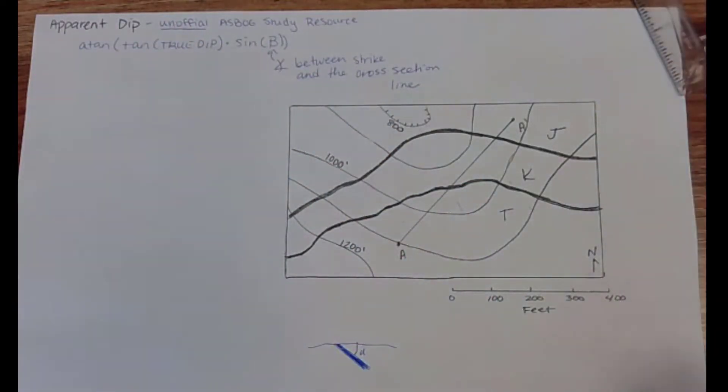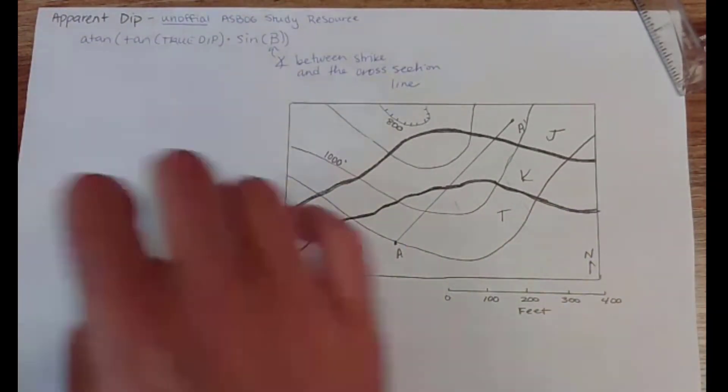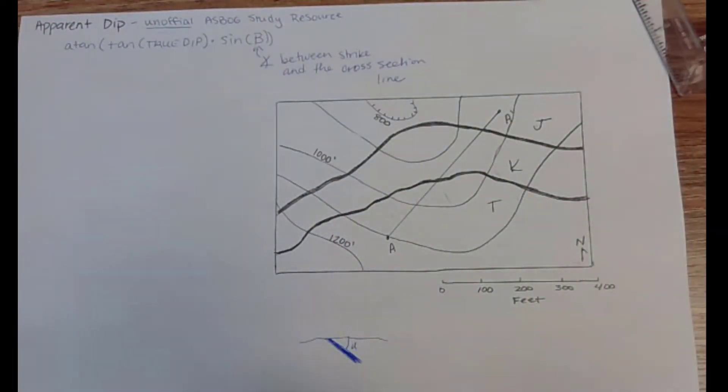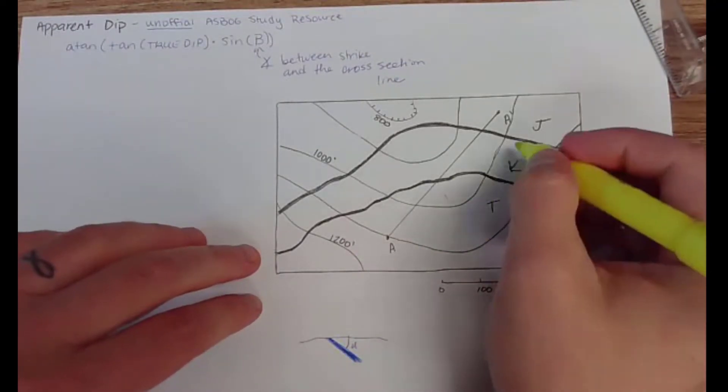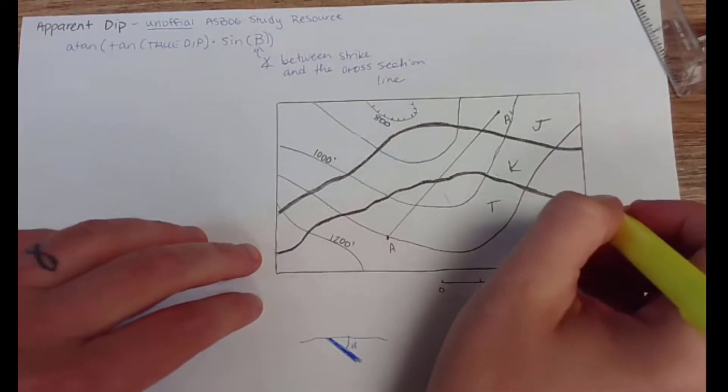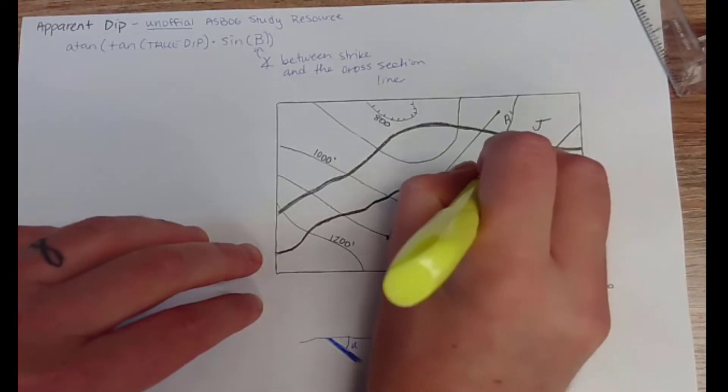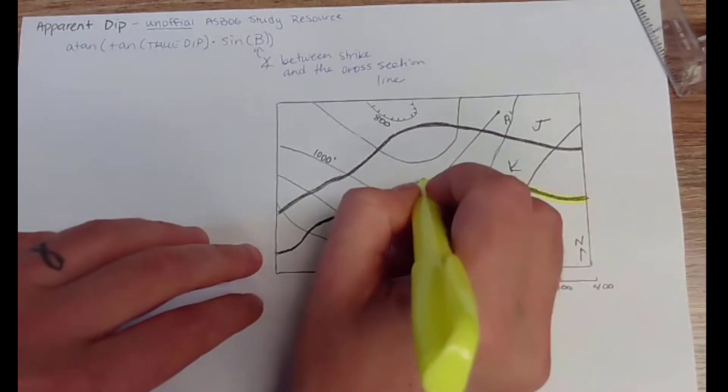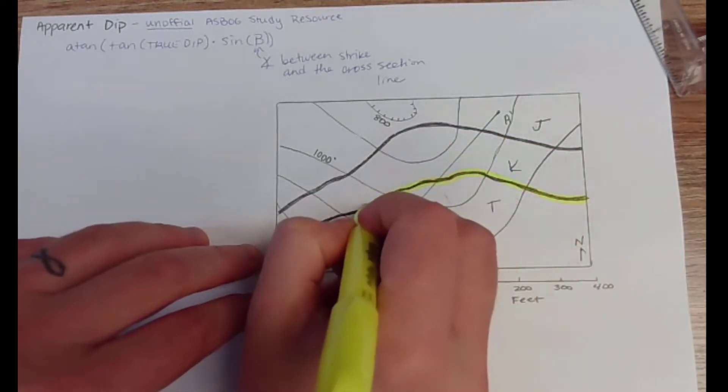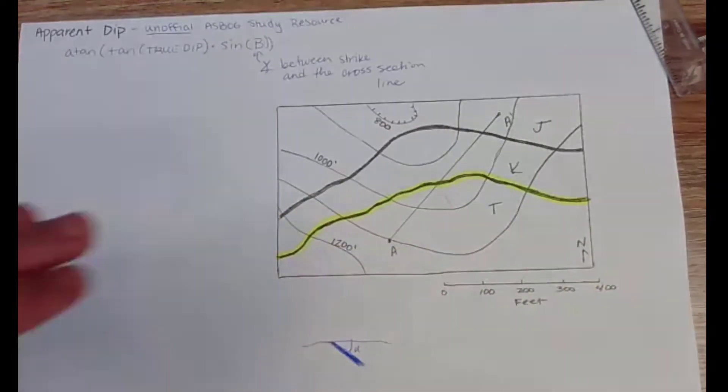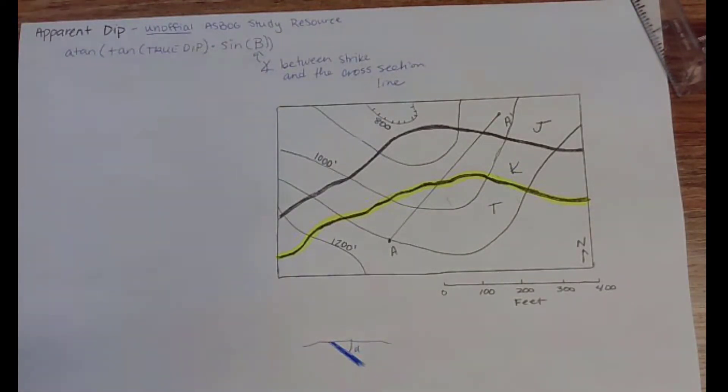So first thing that I've noticed or that I would do is sometimes, especially if an exam is printed in black and white, it's really hard to tell the difference between contour intervals and a contact. So I'm gonna pick one of these contacts - the unit we're interested in is K. Let's say we're gonna find the apparent dip of this boundary between K and T. I'm just gonna highlight that so that I know and I remember that that is my contact.